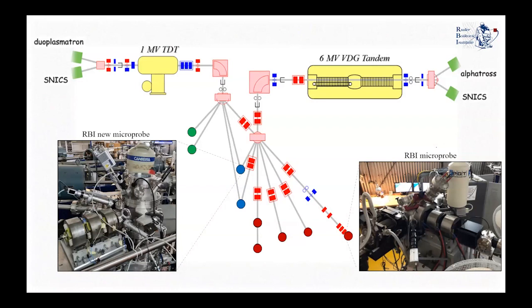Here in our laboratory we have two accelerators: a one megavolt tandetron accelerator and one Van de Graaff accelerator that can reach up to 6 megavolts. These two accelerators are equipped with two sputtering sources, also an alphatross plugged at the Van de Graaff accelerator and the plasmatron tandetron accelerator. With these sources, we can accelerate almost all the elements of the periodic table.